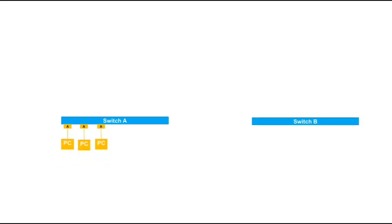These are two switches. To switch A, there are certain PCs connected to certain ports. All these ports are in the same VLAN, so the PCs can communicate with each other. Similarly, there are certain ports which are in different VLANs, to which printers are connected. The printers can communicate with each other, but the printers cannot communicate with the PCs because the PCs are in different VLANs.